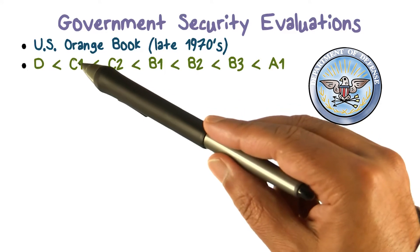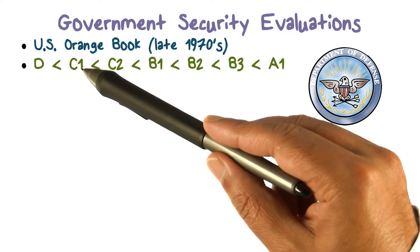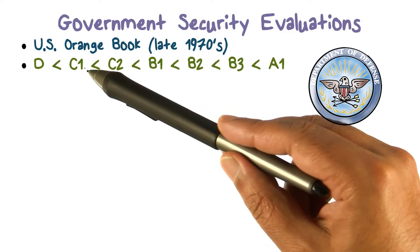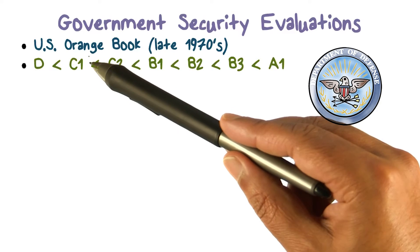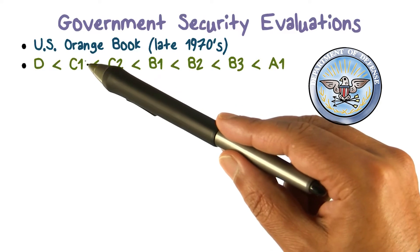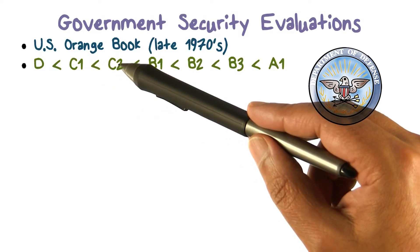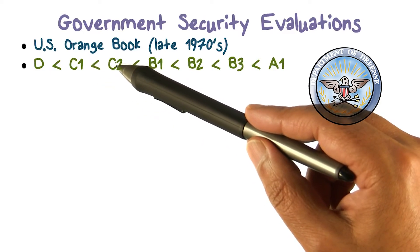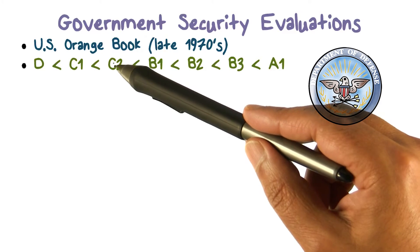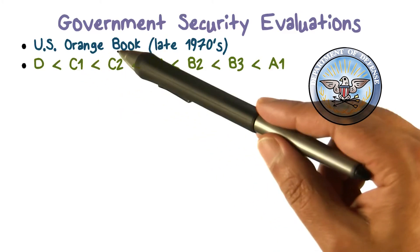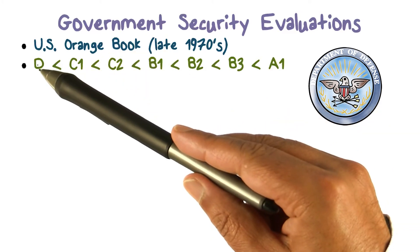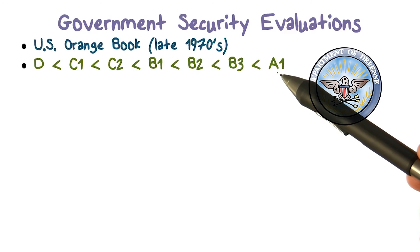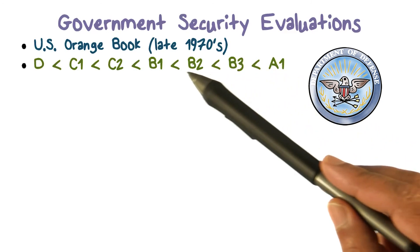Within each division, for example, division C had C1 and C2. C1 doesn't do certain things that C2 does, making C2 more trustworthy. This ordering goes from least trustworthy to the highest level of trust. B1, B2, B3 means three classes within division B.